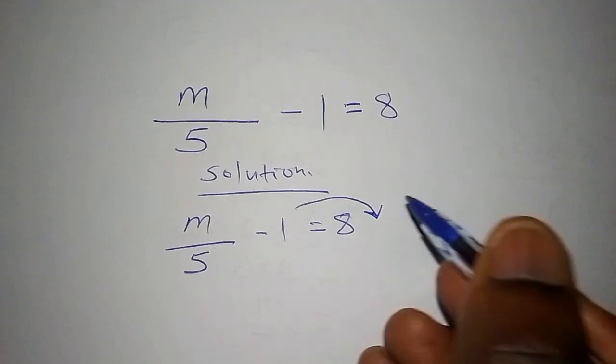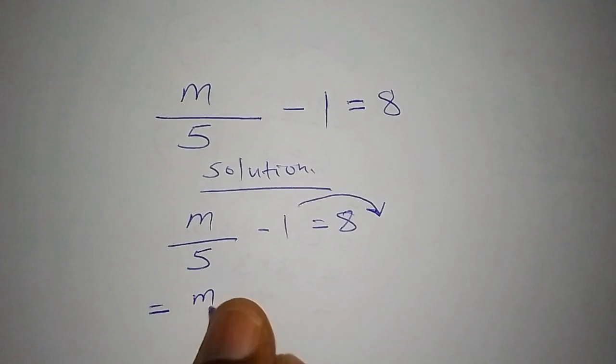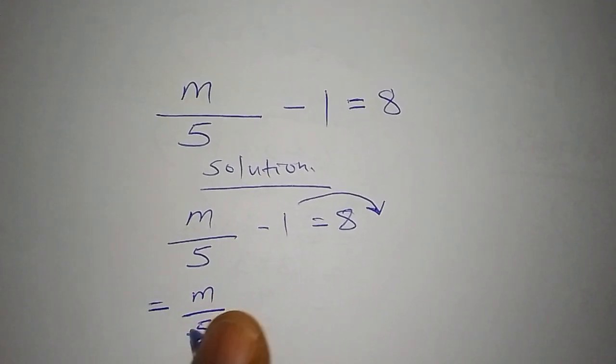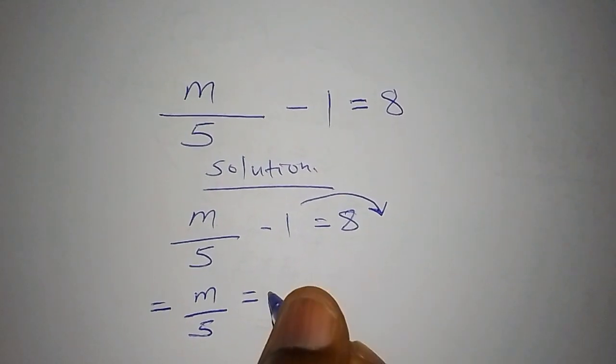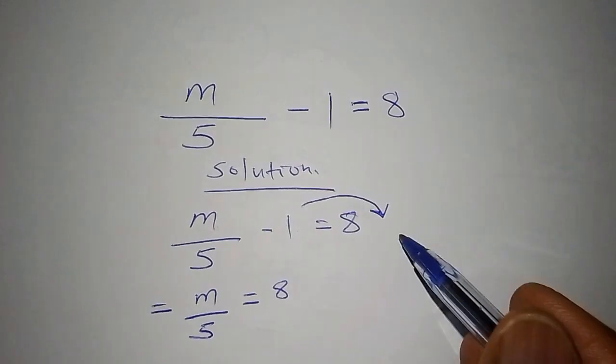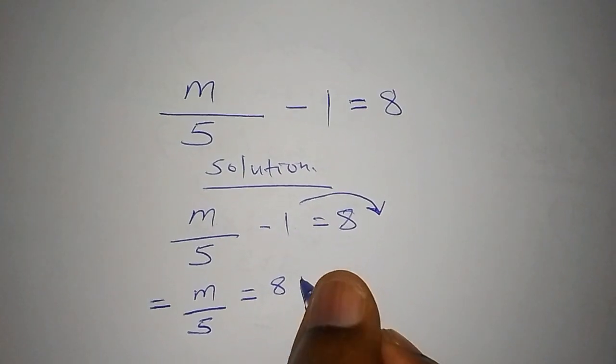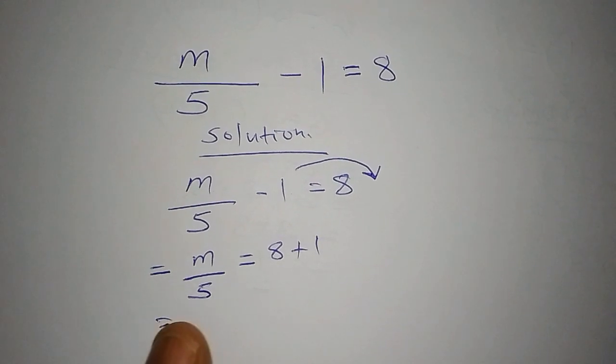This one shall now be equals to m over 5. We have the equal sign here, equals to 8. It was minus 1, when it crosses the equal sign it becomes plus 1.